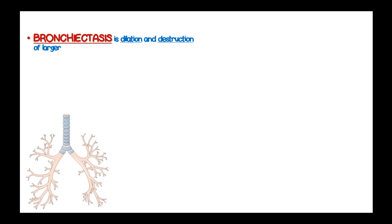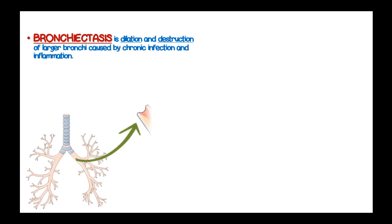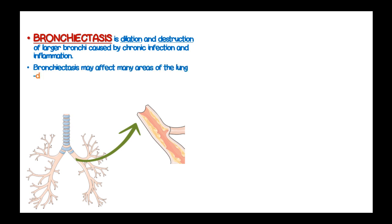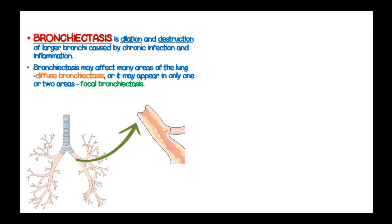Bronchiectasis refers to dilation and destruction of large bronchi caused by chronic infection and inflammation. When bronchiectasis affects many areas of the lung, it is referred to as diffuse bronchiectasis, and when it affects only one or two areas, it is referred to as focal bronchiectasis.